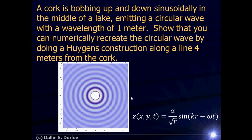When we do our Huygens construction, what we're doing is saying: instead of thinking the wave here is coming because the cork is making it, I can think I'm getting some ripple here because the water's rippling along this line. The cork makes the water ripple along this red line four meters away, and then the rippling of the water on this line makes secondary waves that generate everything downstream. You can think of the little ripples along this line as just an infinite sum of infinitesimal point sources all adding together.